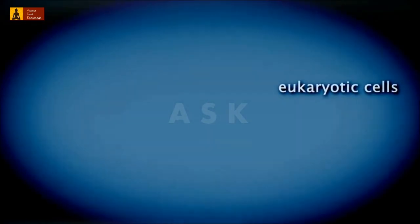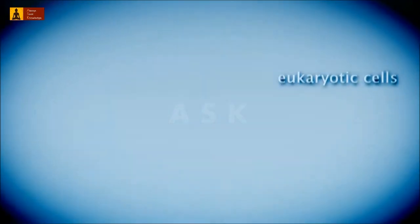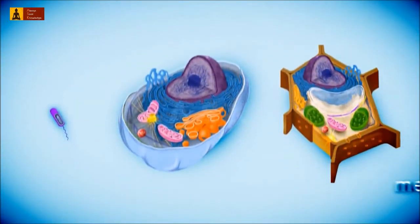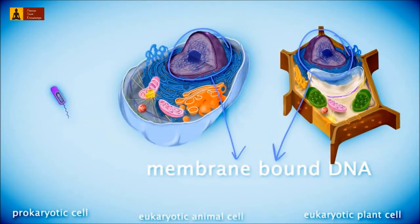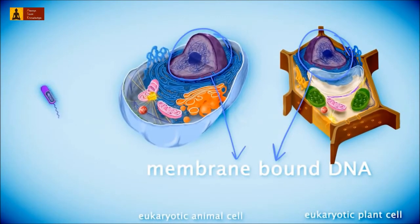Eukaryotic cells have more organelles and therefore are bigger than prokaryotic cells. The main difference between prokaryotic and eukaryotic cells is that eukaryotic DNA is membrane-bound inside a nucleus, whereas prokaryotic DNA is not membrane-bound.